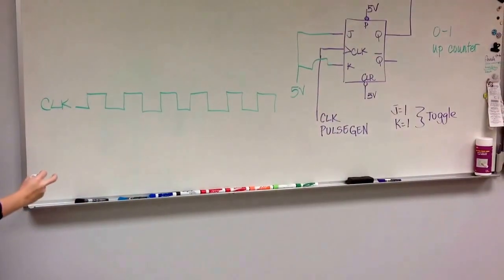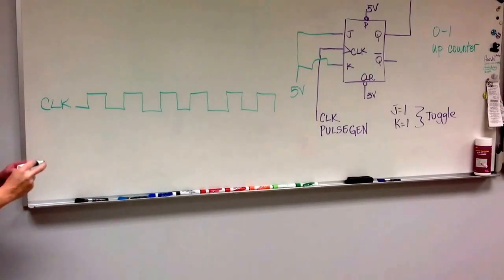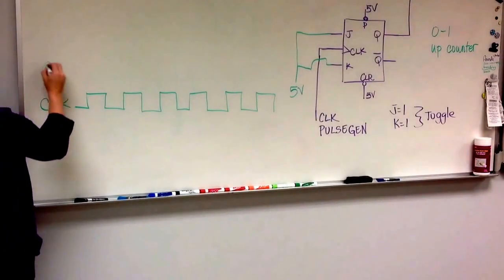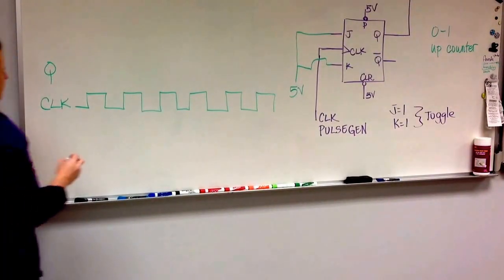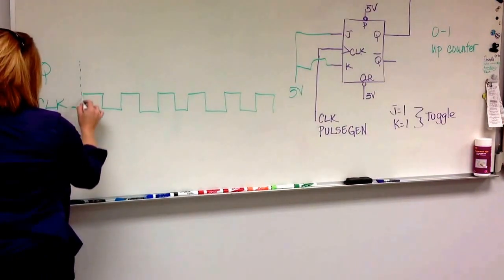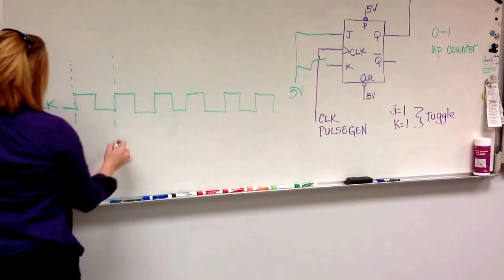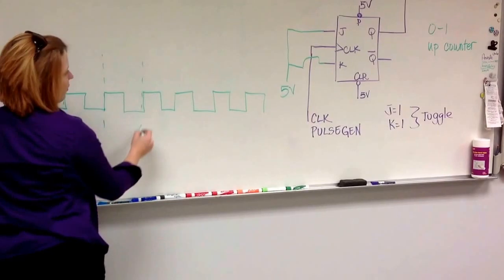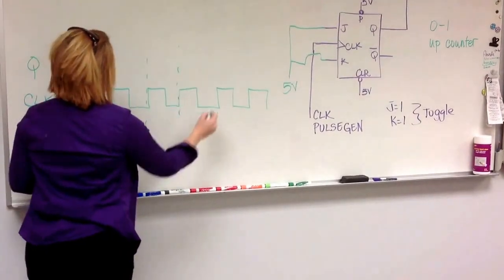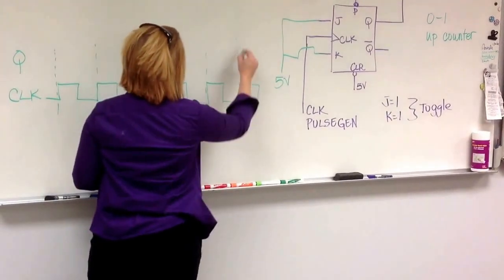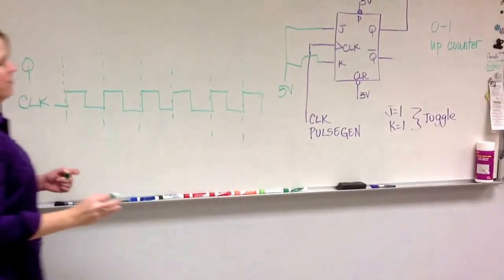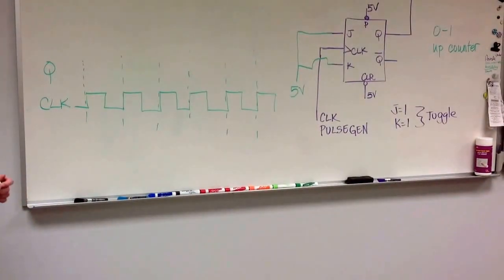Okay, so if that's my clock, and J and K are in the toggle state, and this is Q. Remember that Q is only triggered at the rising edge since I don't have my preset and clear turned on. They are asynchronous, but I don't have them turned on. I have them turned to 5 volts, so they are just disengaged right now.